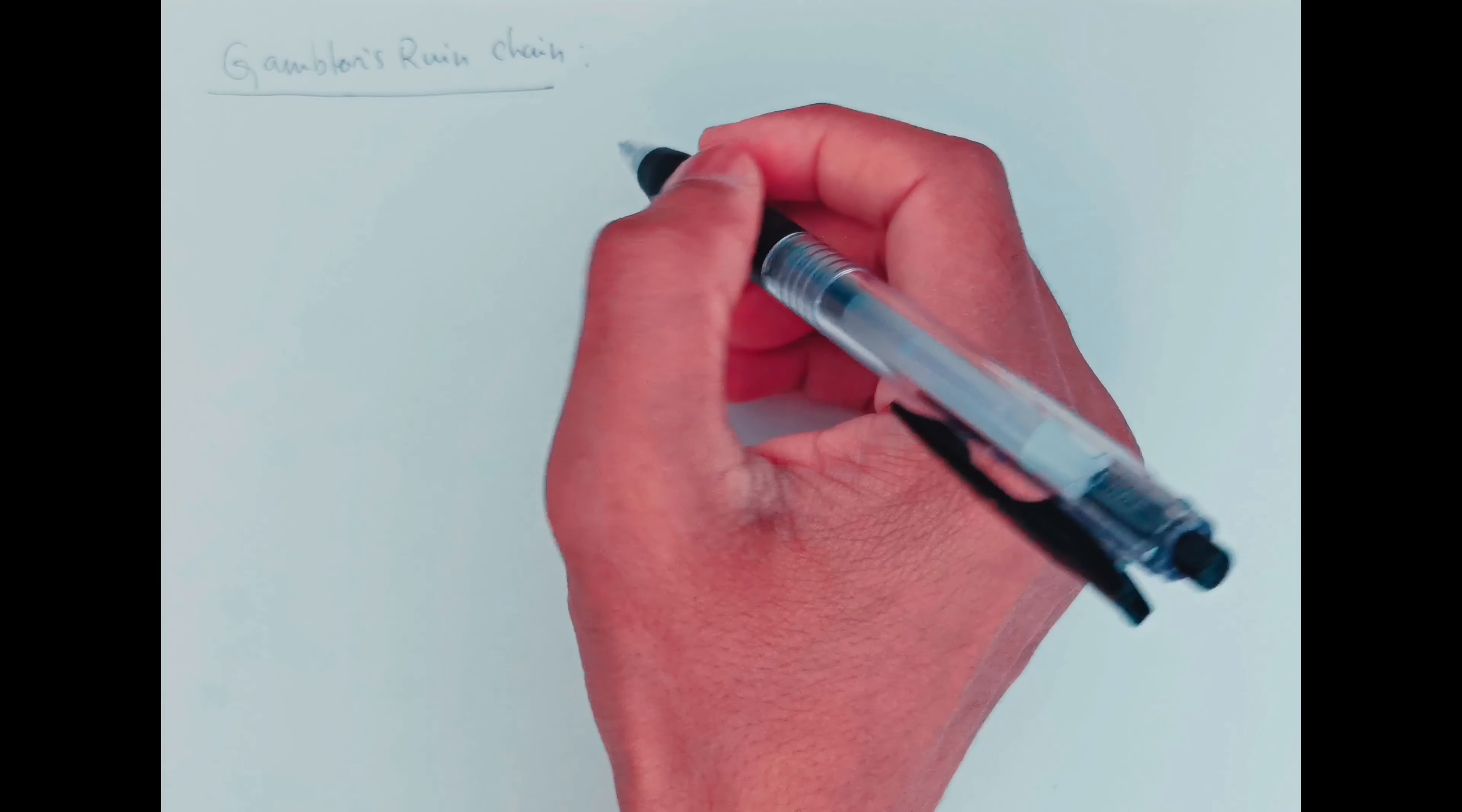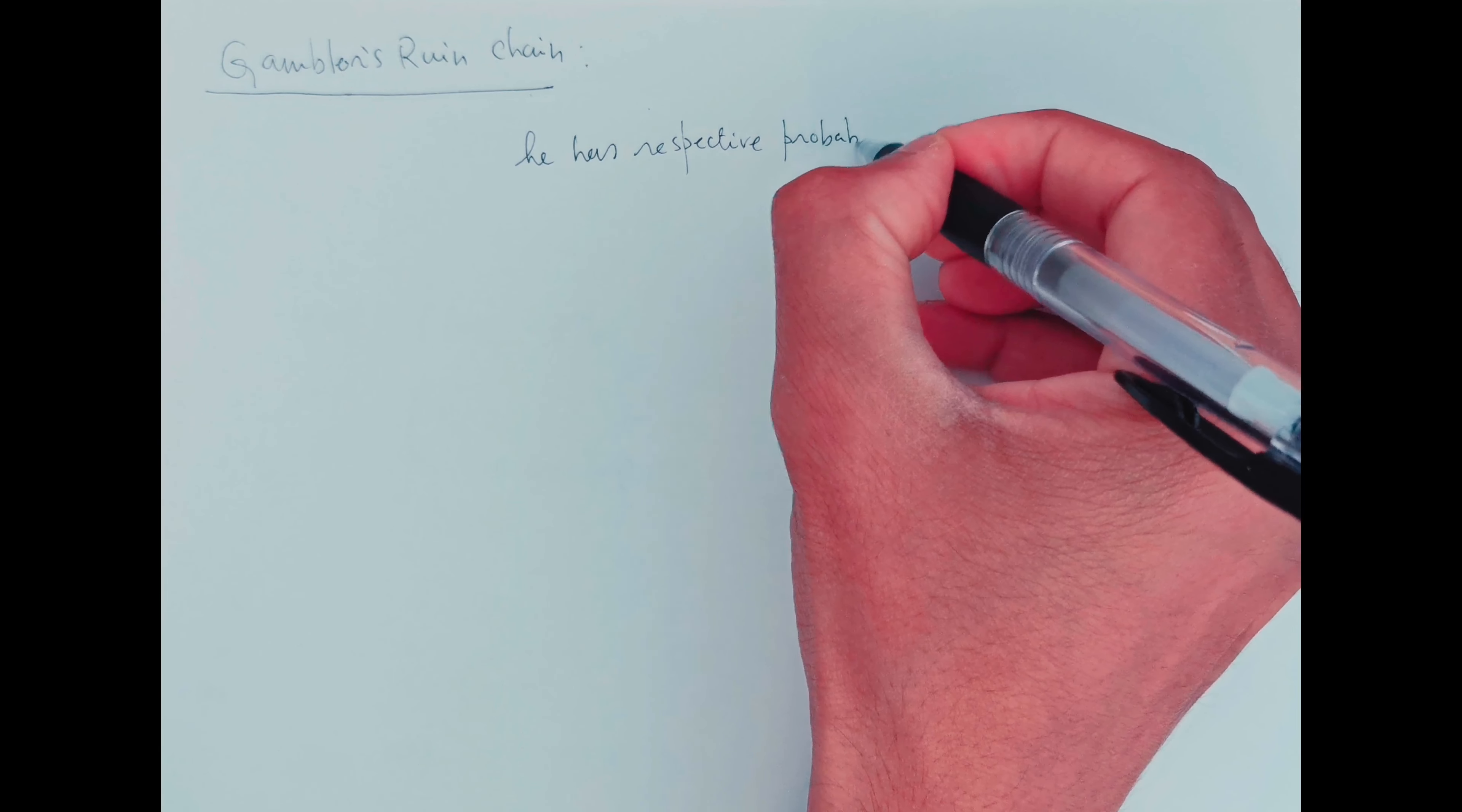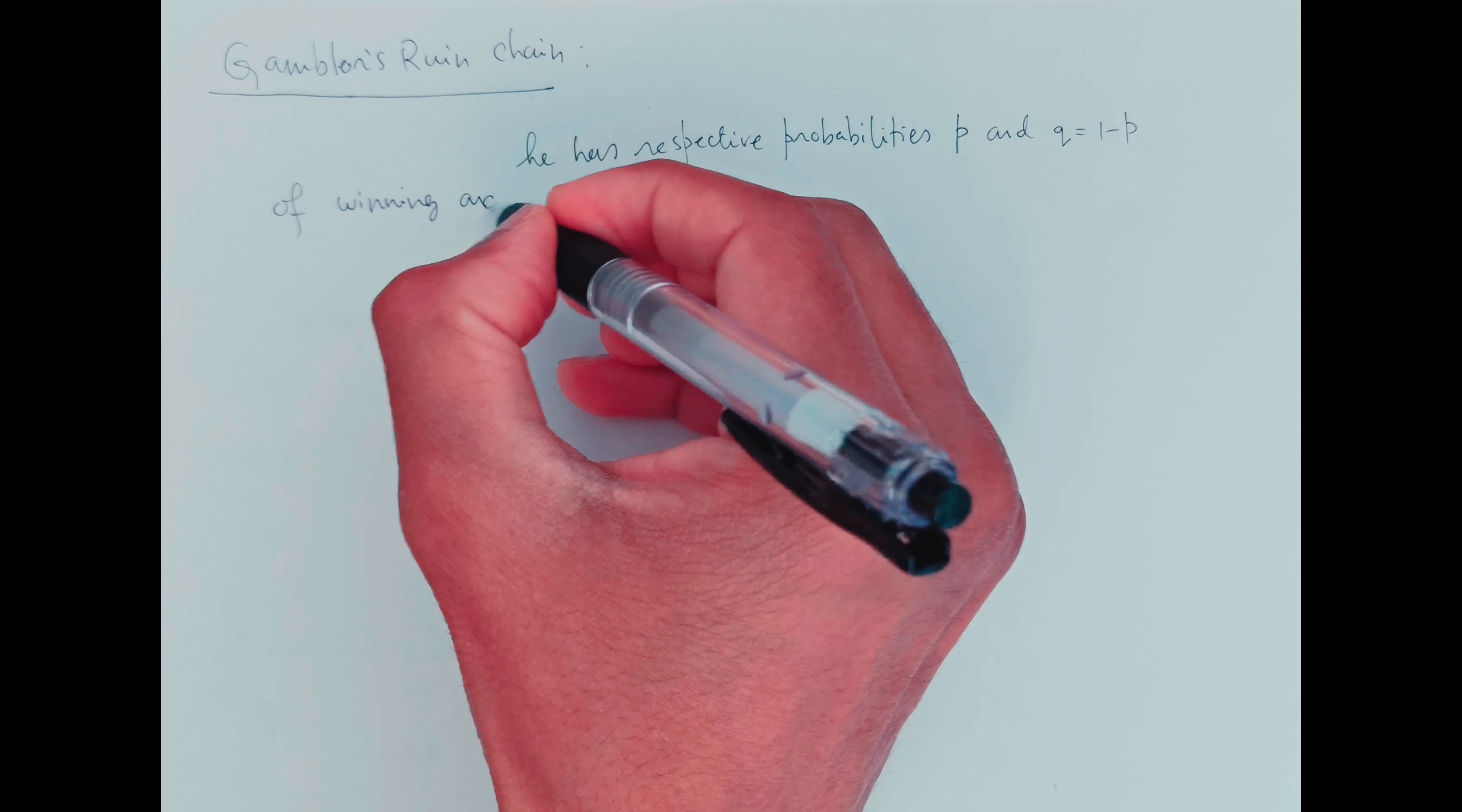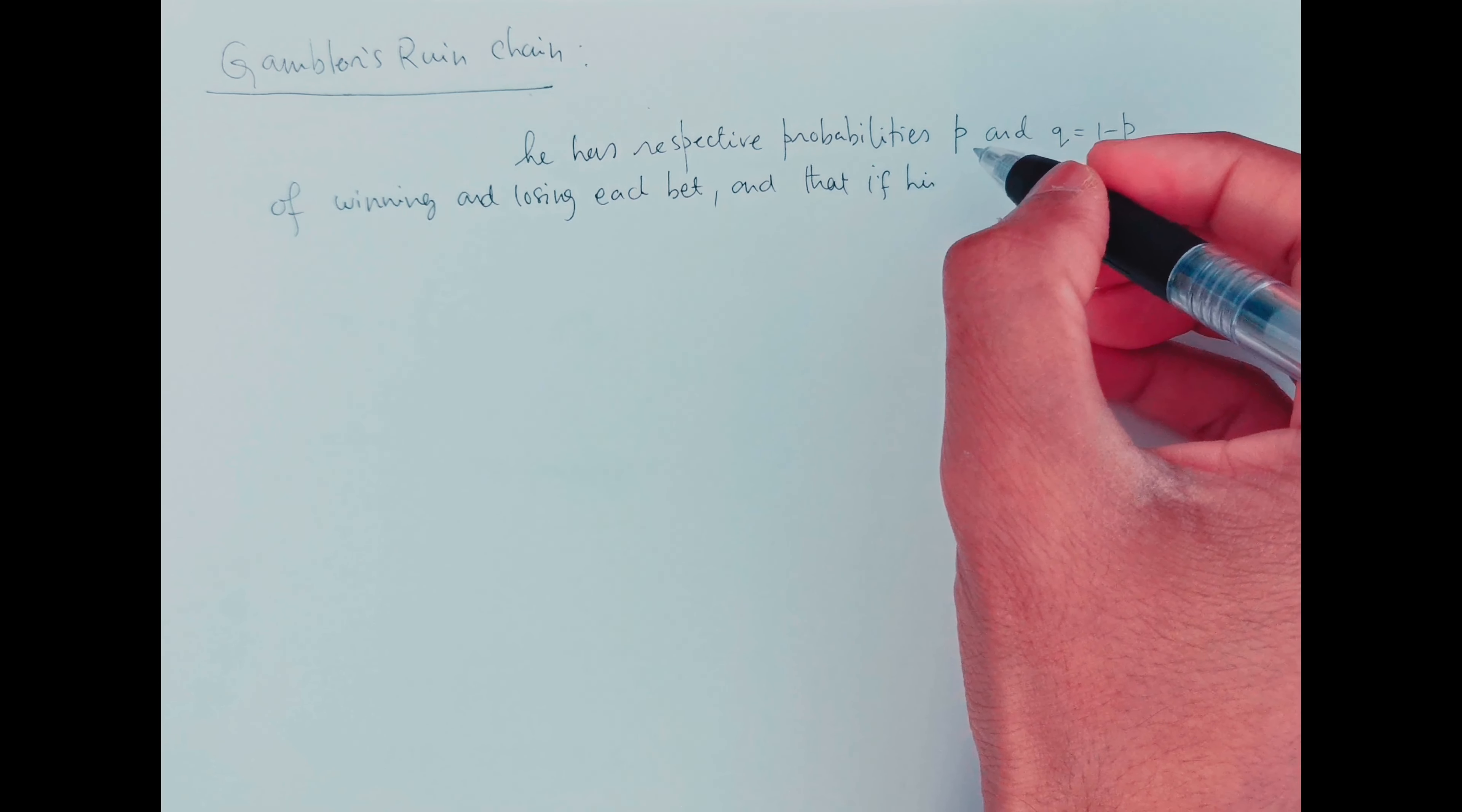Assume that with probability P, he has respective probabilities P and Q, which is 1 minus P, of winning and losing each bet, and that if his capital